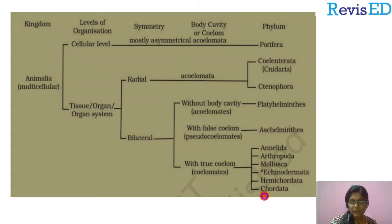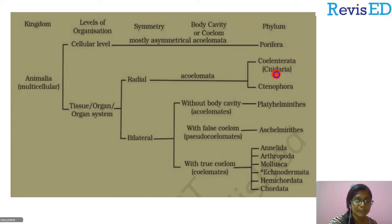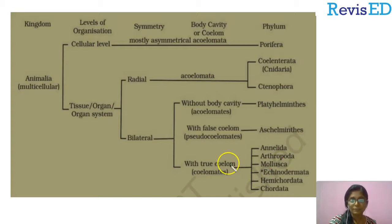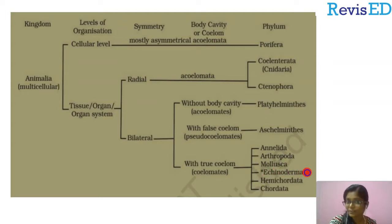Under coelomates, a lot of phyla are coming in. One phylum — Echinodermata — is not typically classified here but is included because they have a true coelom, marked with an asterisk. The phyla coming under coelomates are Phylum Annelida, which has a true coelom, Phylum Arthropoda, which has a true coelom and includes insects, and Mollusca, which includes snails and pearl oysters.